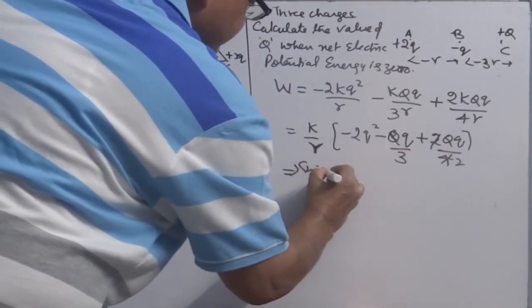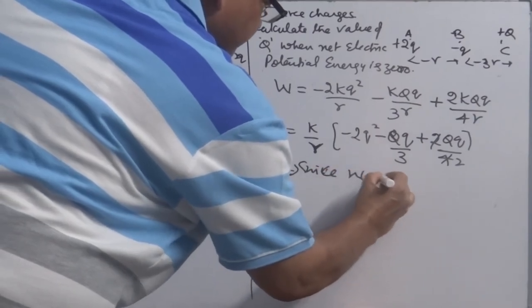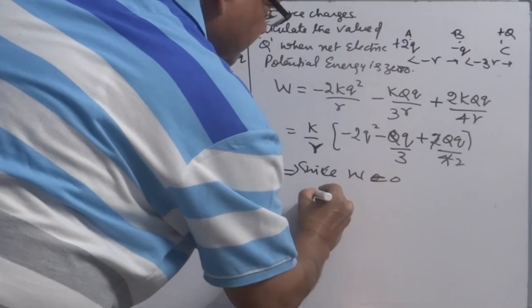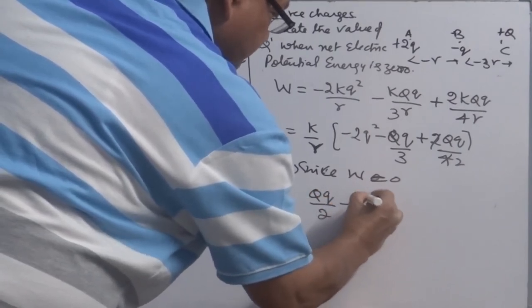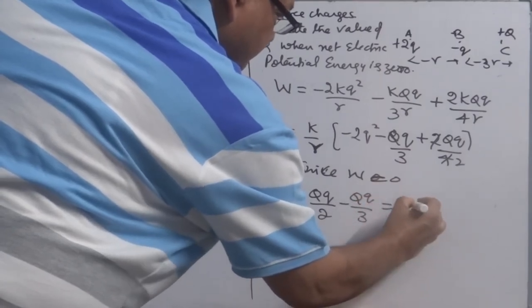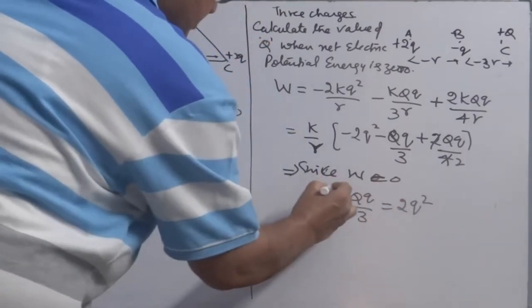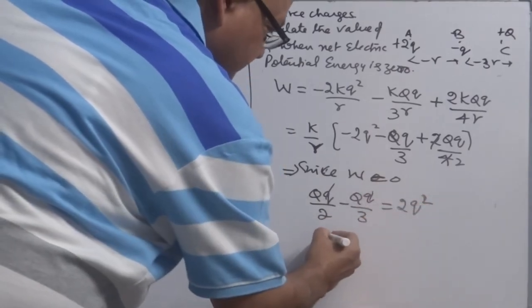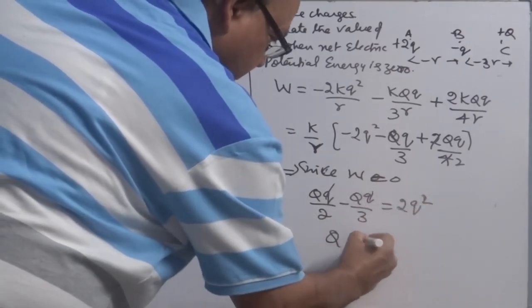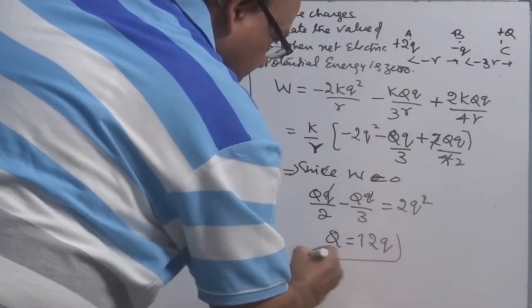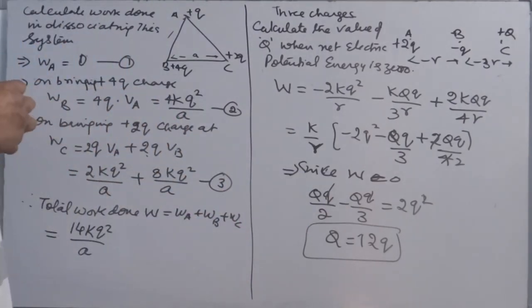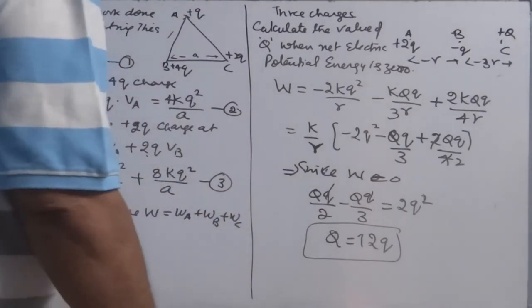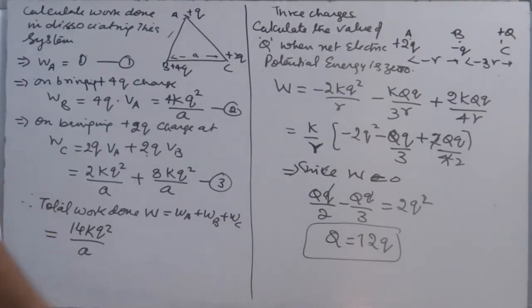Since work done is 0, it means QQ by 2 minus QQ over 3 is equal to 2Q square. Q also cancels. So what is left? Q is equal to 12Q on solving. LCM will be 6. You will have Q by 6 is equal to 12Q. Then these are the types of questions which are normally asked.